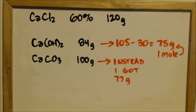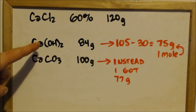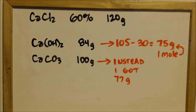We ended up getting 105 grams minus about 30 for water, that's 75 grams — so we actually got almost exactly one mole, losing about 10% of a mole. For the carbonate comparison: one mole is 100 grams but we only got 77, so we lost 23 grams there too. Anyway, always remember — science is great!